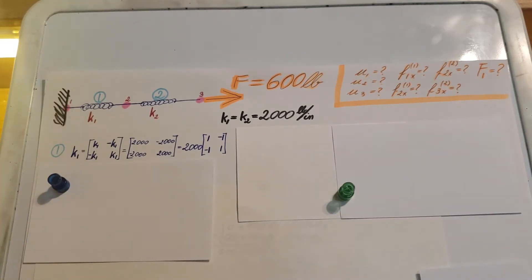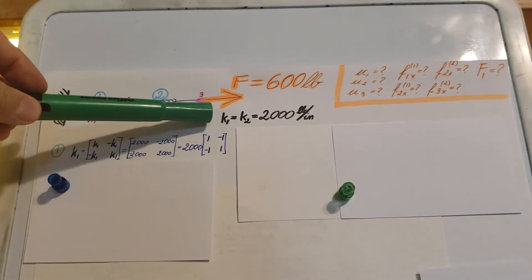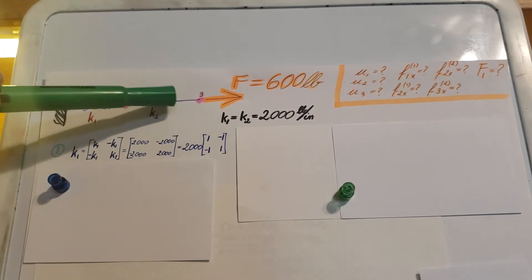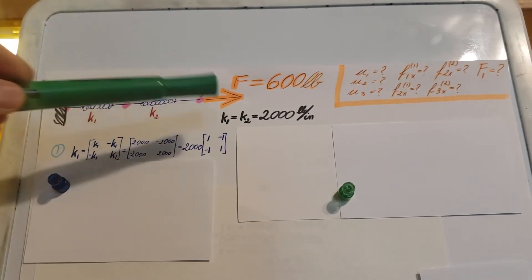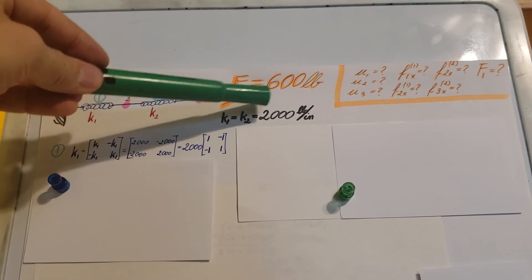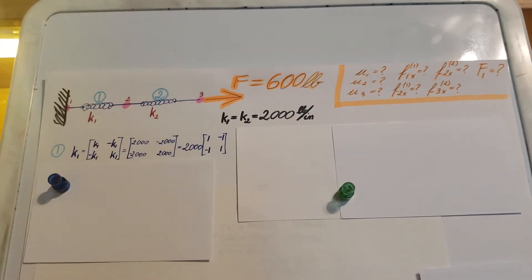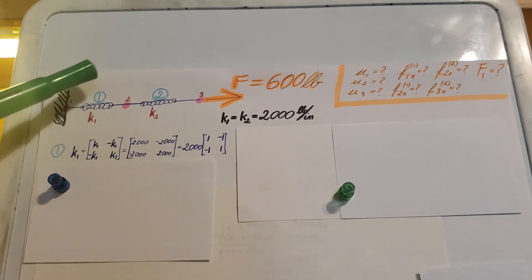The value of K is given. For us, K1 is the same as K2 — both springs are the same kind — and it's 2000 pounds per inch. We're going to use this information to find our elemental stiffness matrix for each element.